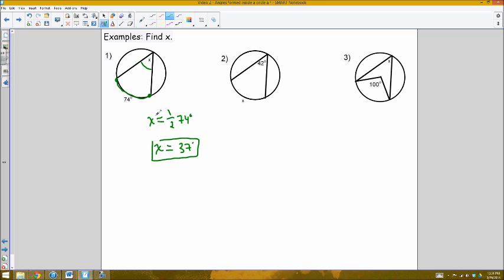This gives me a way of finding the missing values. Vice versa, if I know the angle is 42, then 42 is one half the intercepted arc, which in this case is X. So X is 2 times 42, or 84 degrees.